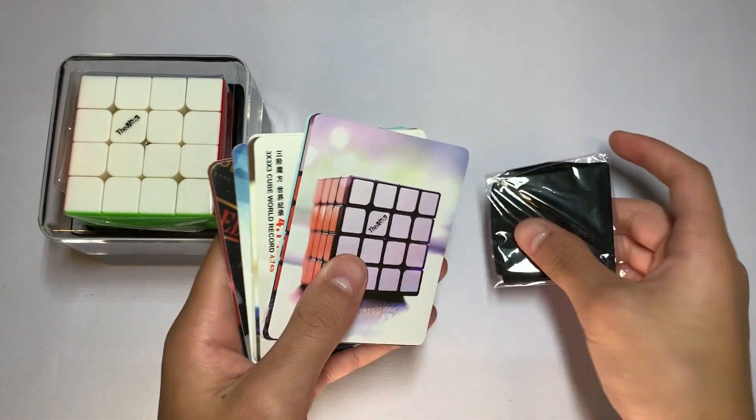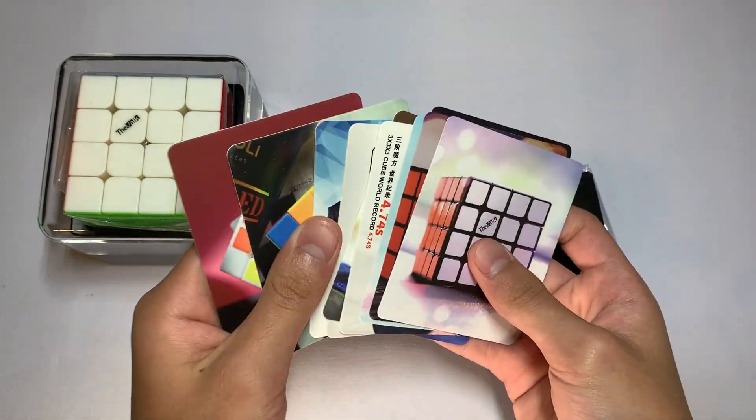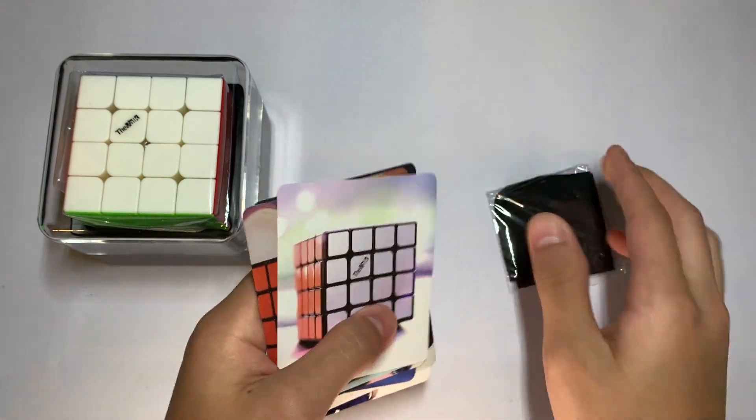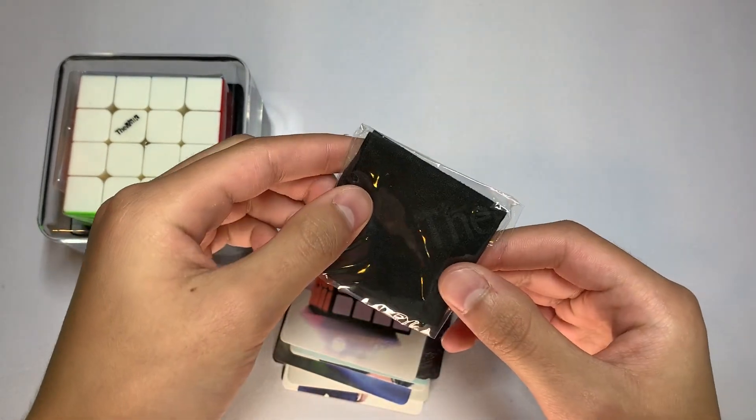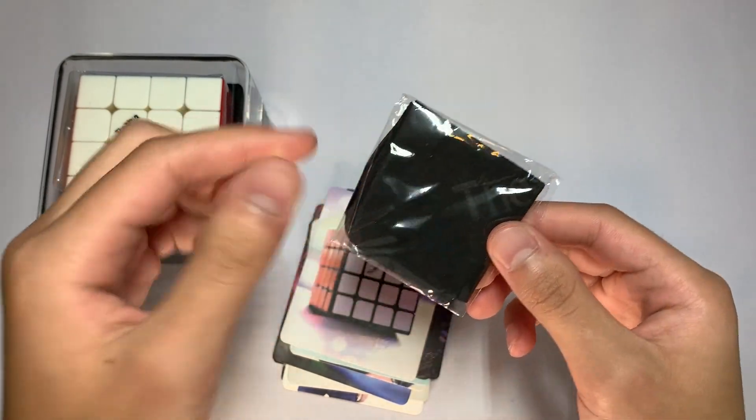It looks like we have just a bunch of cards. Yeah, a lot of cards, as well as what looks like a microfiber cloth that might say the Valk on it. Pretty cool.